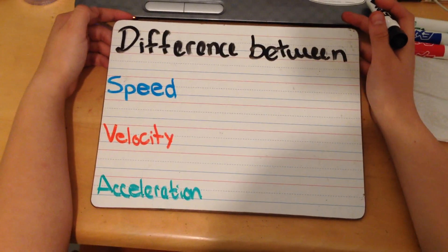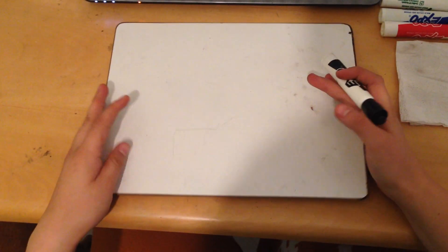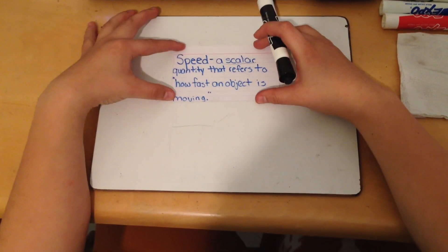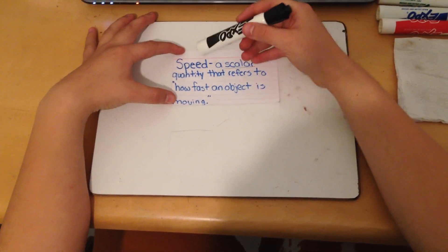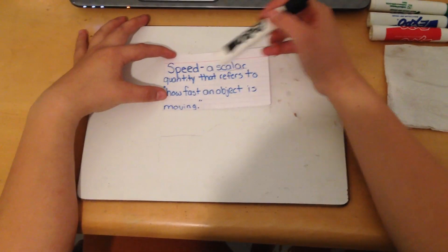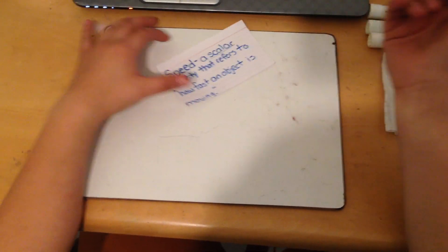Today we're going to go over the difference between speed, velocity, and acceleration. We're going to start with the definition of speed, and speed is the scalar quantity that refers to how fast an object is moving.